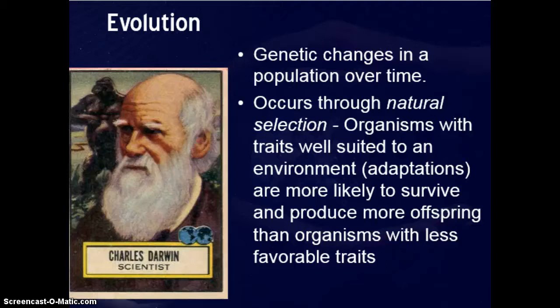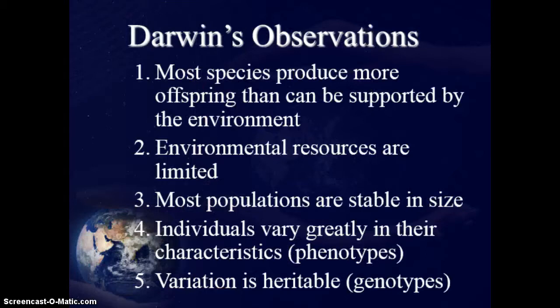Evolution by natural selection is essentially genetic changes in a population over time that result in new organisms. Natural selection is the idea that organisms best suited to an environment have certain adaptations making them more likely to survive and produce more offspring than organisms with less favorable traits. This was originally developed in the 1800s by Charles Darwin. His key observations were: species produce more offspring than the environment can support; resources are limited; population size stays stable — so something must be happening to organisms that can't be supported; and the traits of organisms vary quite a bit, which must come from something hereditary — the genes themselves.